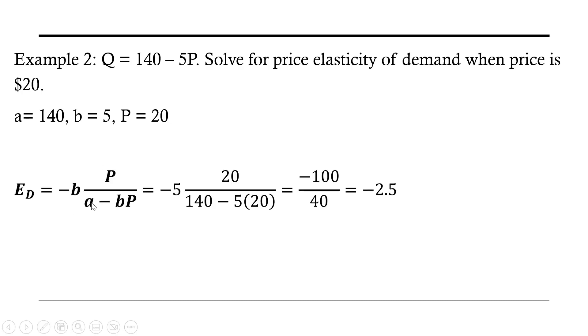Taking our general solution and now making the substitutions. For B, we plug in 5. For the price, we plug in 20. A is 140 minus B times the price here.